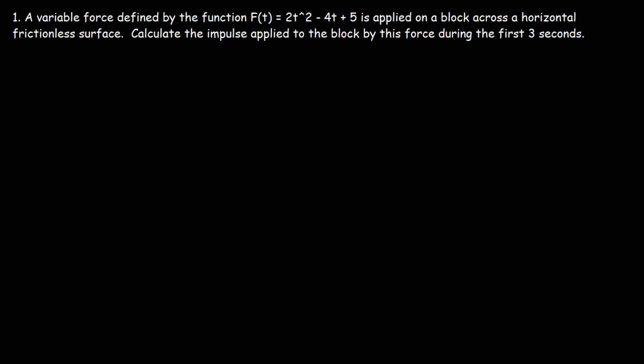A variable force defined by the function f(t) = 2t² - 4t + 5 is applied on a block across a horizontal frictionless surface. Calculate the impulse applied to the block by this force during the first 3 seconds.